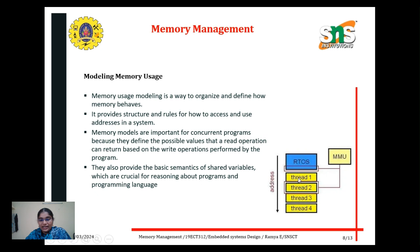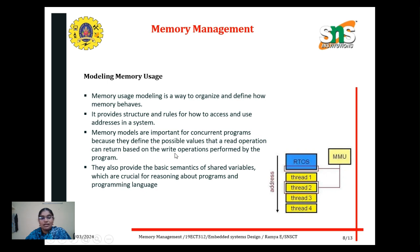Here we can see the diagram. Four threads are used in the RTOS — real-time operating system — memory management unit. Memory usage modeling is the way to organize and define how memory behaves. It provides structure and rules for how to access and use addresses in a system. Memory models are important for concurrent programs because they define the possible values that a read operation can return based on the write operations performed by the program. They also provide the basic semantics of shared variables, which are crucial for reasoning about programs under programming languages.